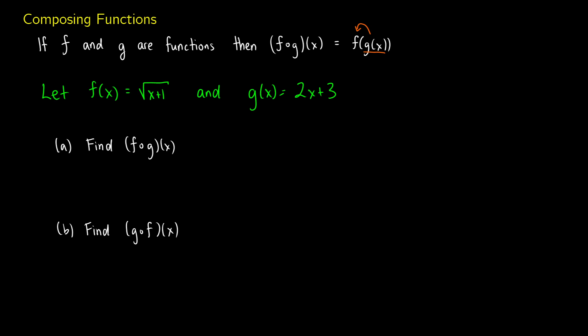So if we say that f of x is equal to the square root of x plus one and g of x is equal to 2x plus three, we can find two compositions here. We can do f of g of x and we can do g of f of x.